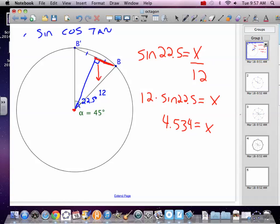Now, you've got to remember, that's only half of our chord. So we want to double that. And we get 9.068 is our actual chord B to B prime.